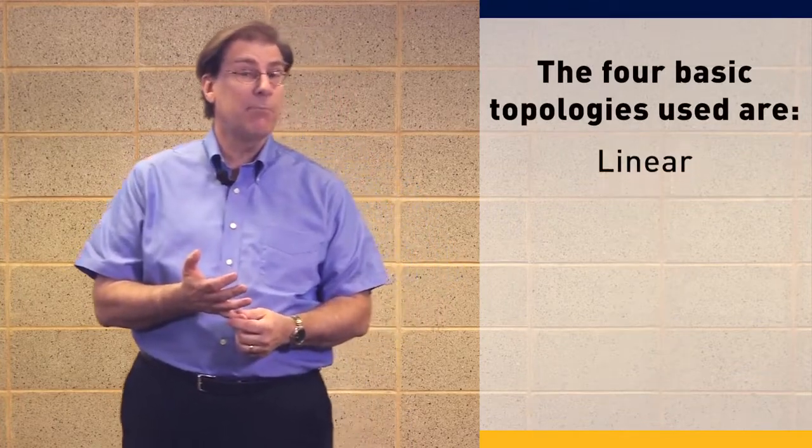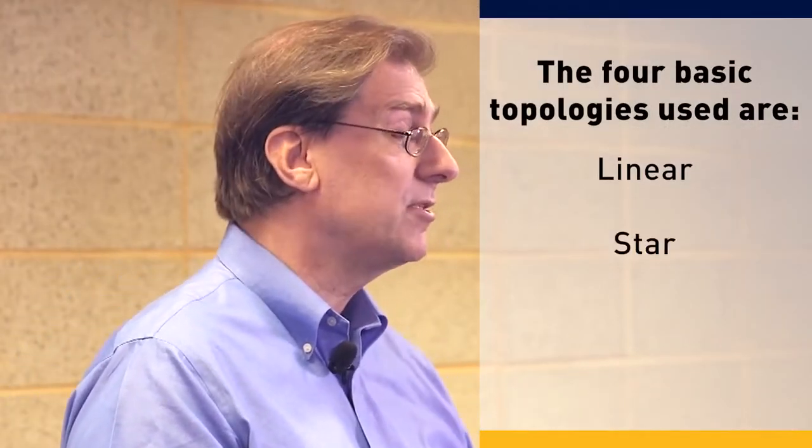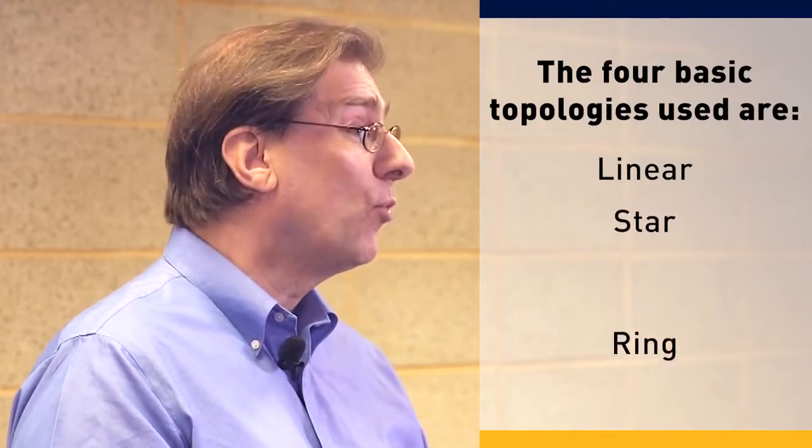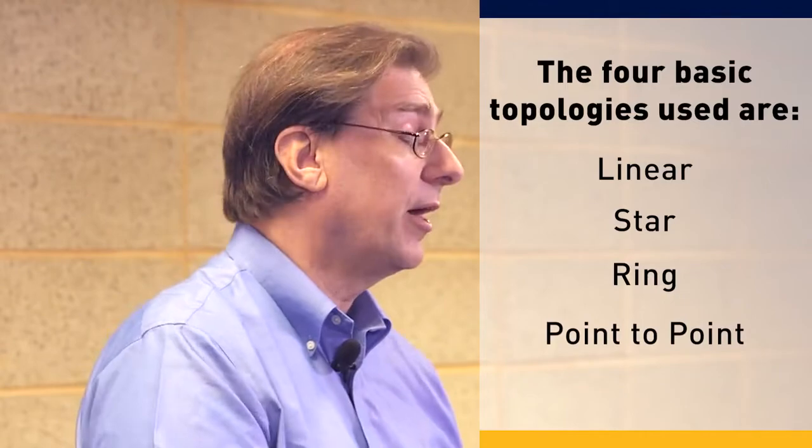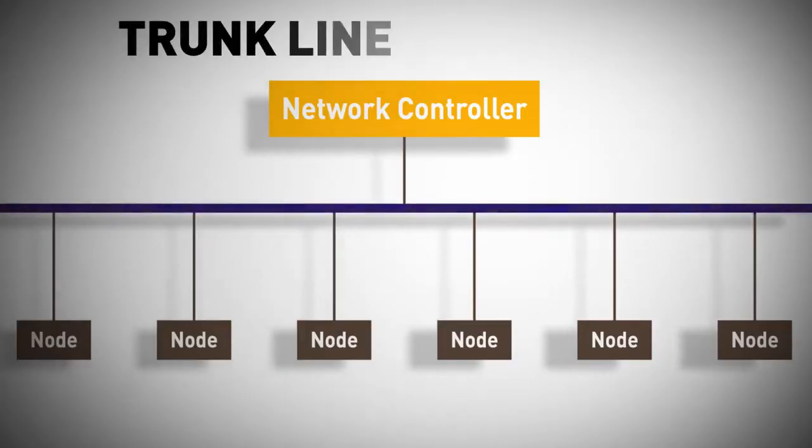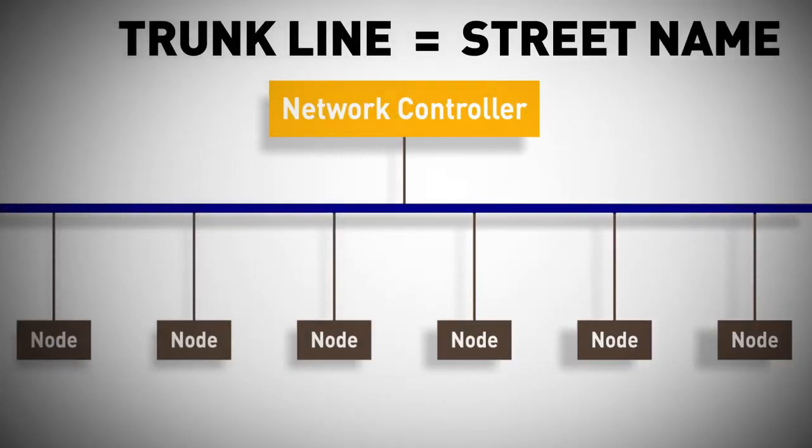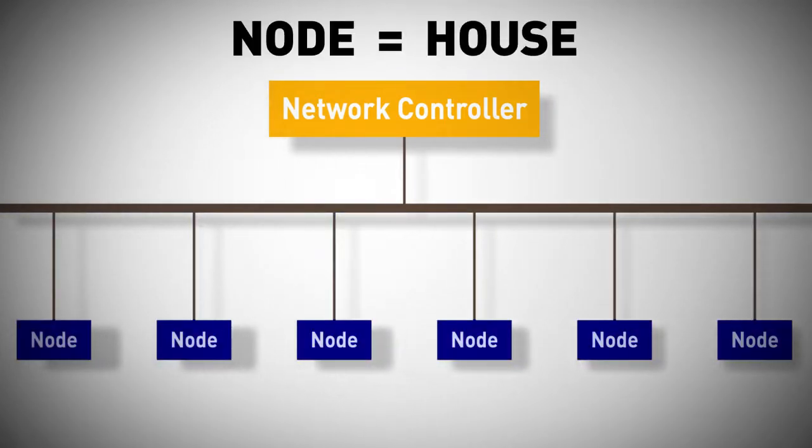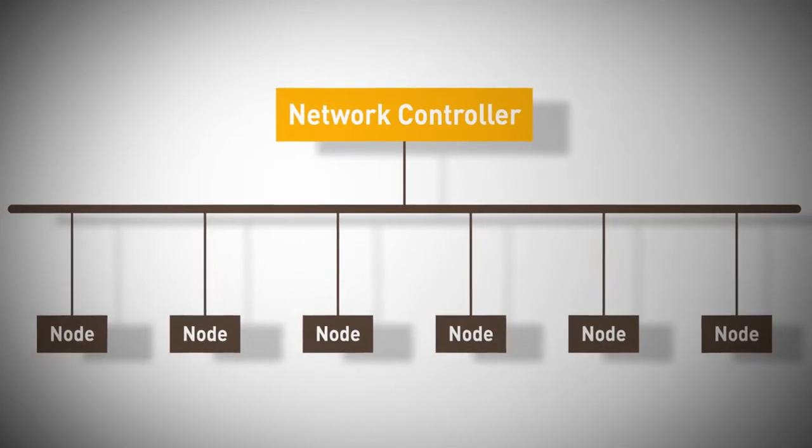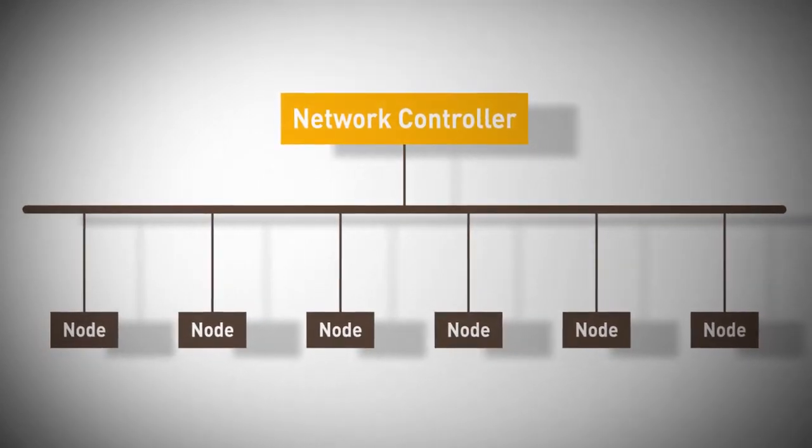There are four basic topologies that are used. A linear trunk and drop is just sort of like our standard street address, a star topology, ring, and a point to point, which is a master slave, which is like used for IO-Link. The street would be called sort of like our trunk line. Each driveway would be a drop line, and each node would be a house. So again, this looks just like a standard street that you'd have in any normal neighborhood.